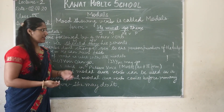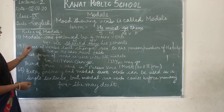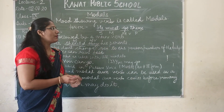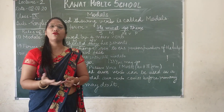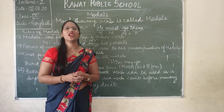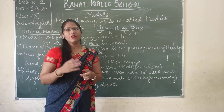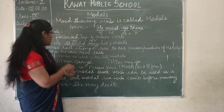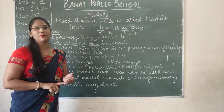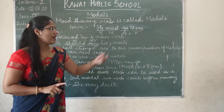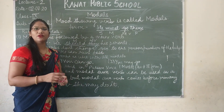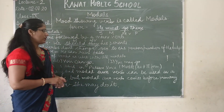Rule 2: The forms of modals do not change according to the person or number of the subject. For example, 'he can run fast' — whether the subject is first person, second person, or third person, and whether singular or plural, the modal form does not change.